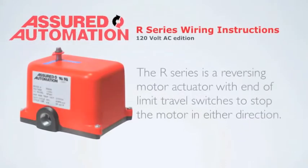This is the R-Series Wiring Instructions 120V AC Edition. The R-Series is a reversing motor actuator with end-of-limit travel switches to stop the motor in either direction.